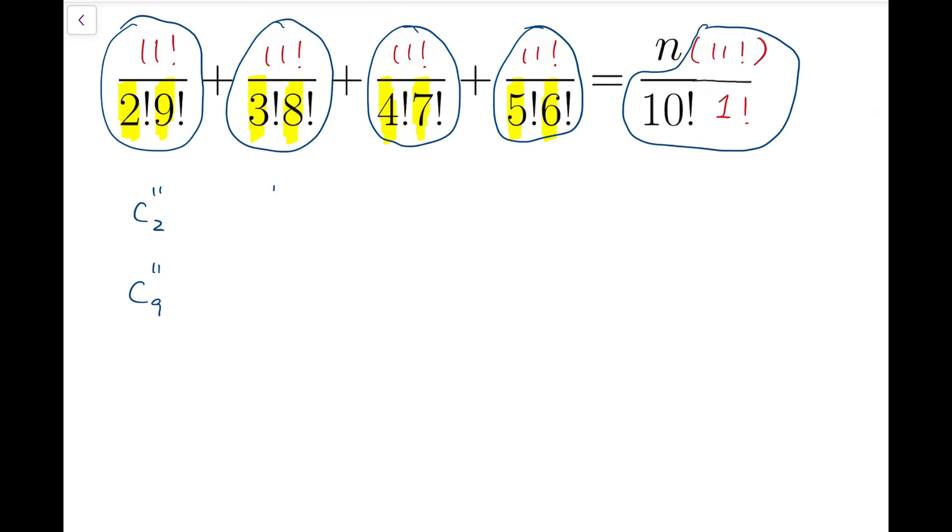The second one, 11 choose 3, or 11 choose 8. The third term, 11 choose 4, or 11 choose 7. And the last term, 11 choose 5, or 11 choose 6. Now from the right-hand side, we will have 11 choose 1, or 11 choose 10.